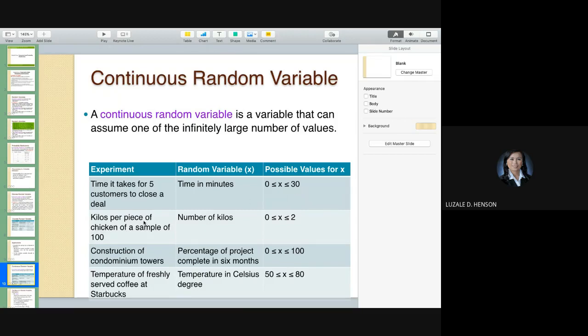Those are possible values of X. Or say, for example, kilos per piece of chicken of a sample of 100 chickens, 100 dressed chickens. Number of kilos. So, that's what you're interested in because you are maybe the one in charge in the quality control. Such that their roasted chicken should not exceed 1 kilo, for example. So, you want to filter that. So, you have 0 to 2, or maybe you can change this to 1 if you want. So, it's up to you what are the possible values of X. Maybe you could also disregard if ever it exceeds 1. That's for others.